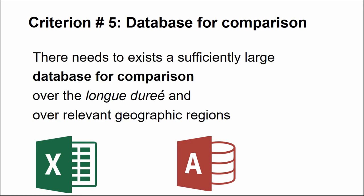Criteria number five: there needs to exist a sufficiently large database for comparison over the long term and over relevant geographic regions. This is a work in progress, but to date there are dozens of archeobotanical assemblages studied from the pre-Islamic period in the Levant — from Roman and Byzantine periods — so it's enough to begin synthesizing and comparing results from early Islamic times.